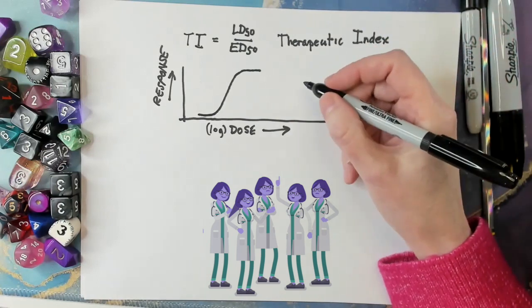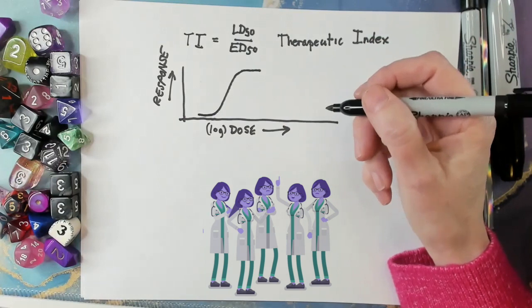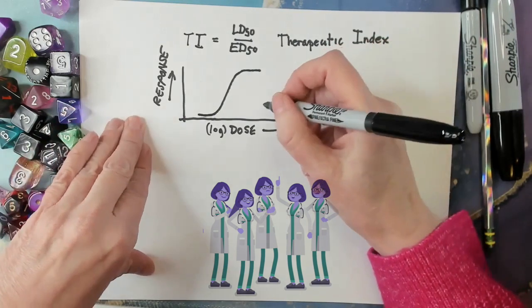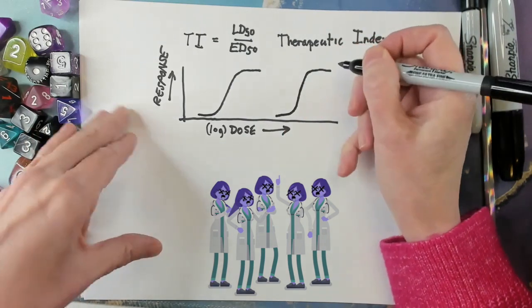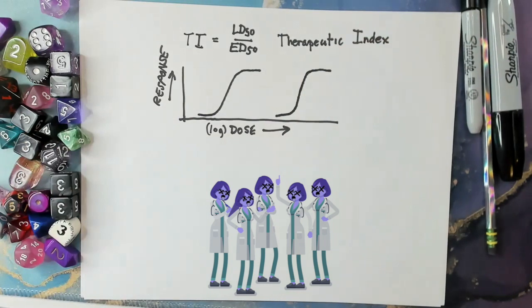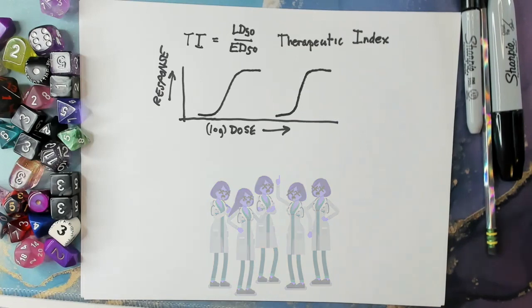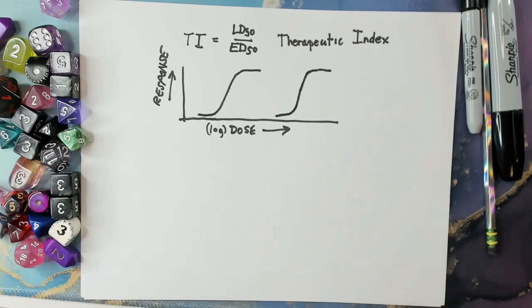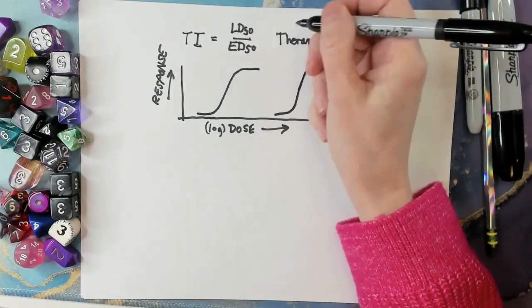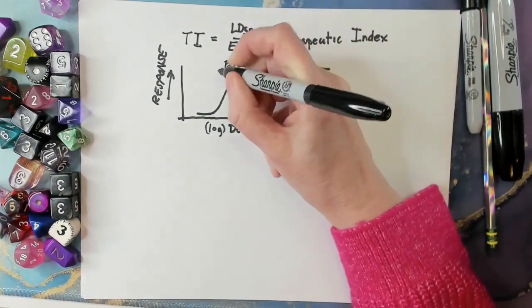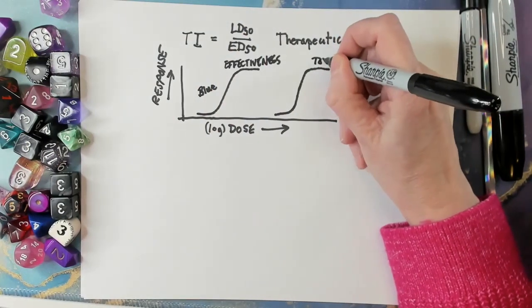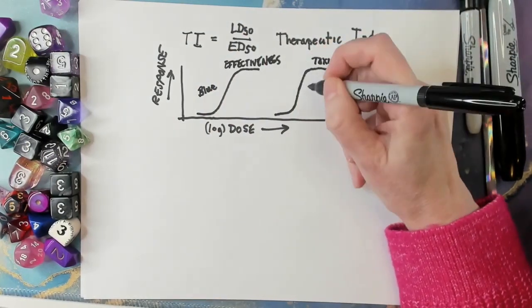Now, if I continue giving increasing doses to the clones, at some point, if I give them a high enough dose, they start dying off. Because when you give a drug at higher and higher levels, it will not specifically only bind the protein it's meant for — it'll start binding all sorts of things and eventually kill you. So this first curve is effectiveness, which in this case is blueness, and this second curve is toxicity, meaning death.